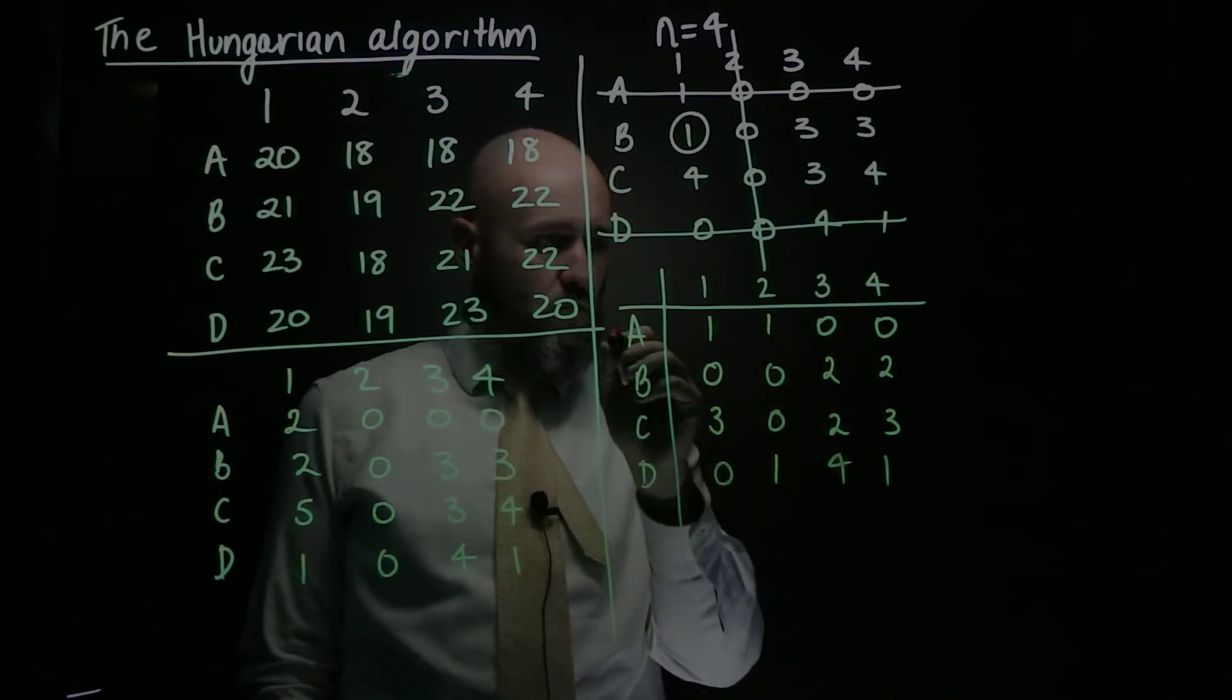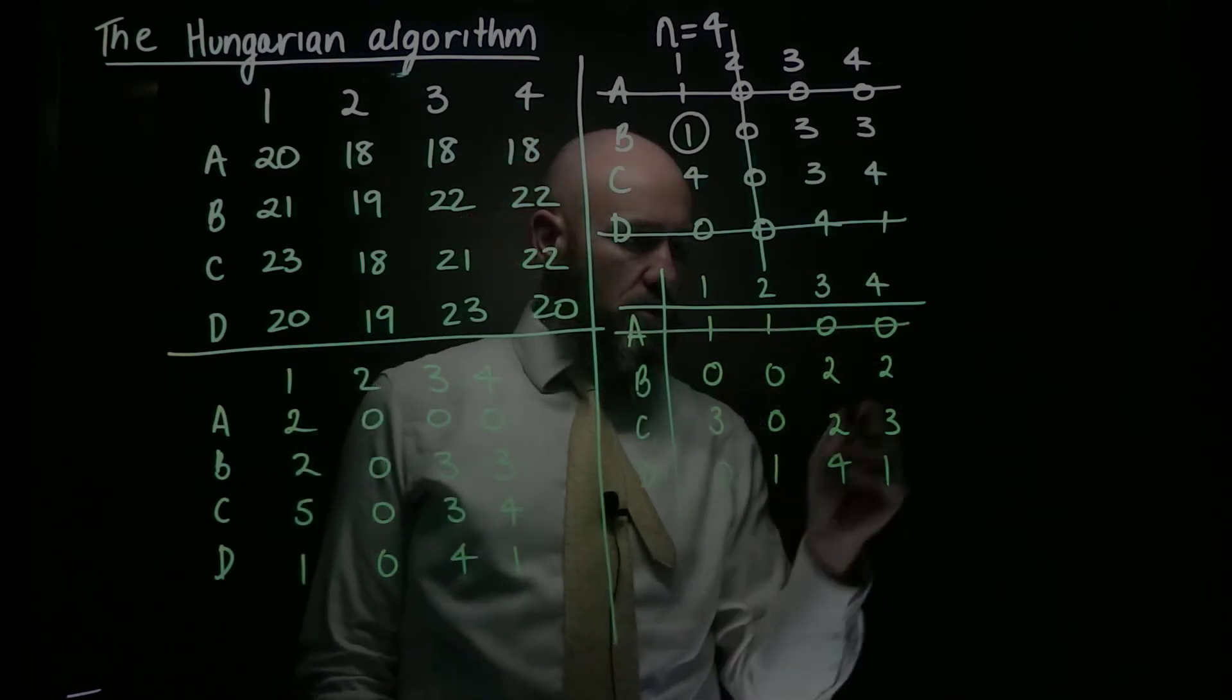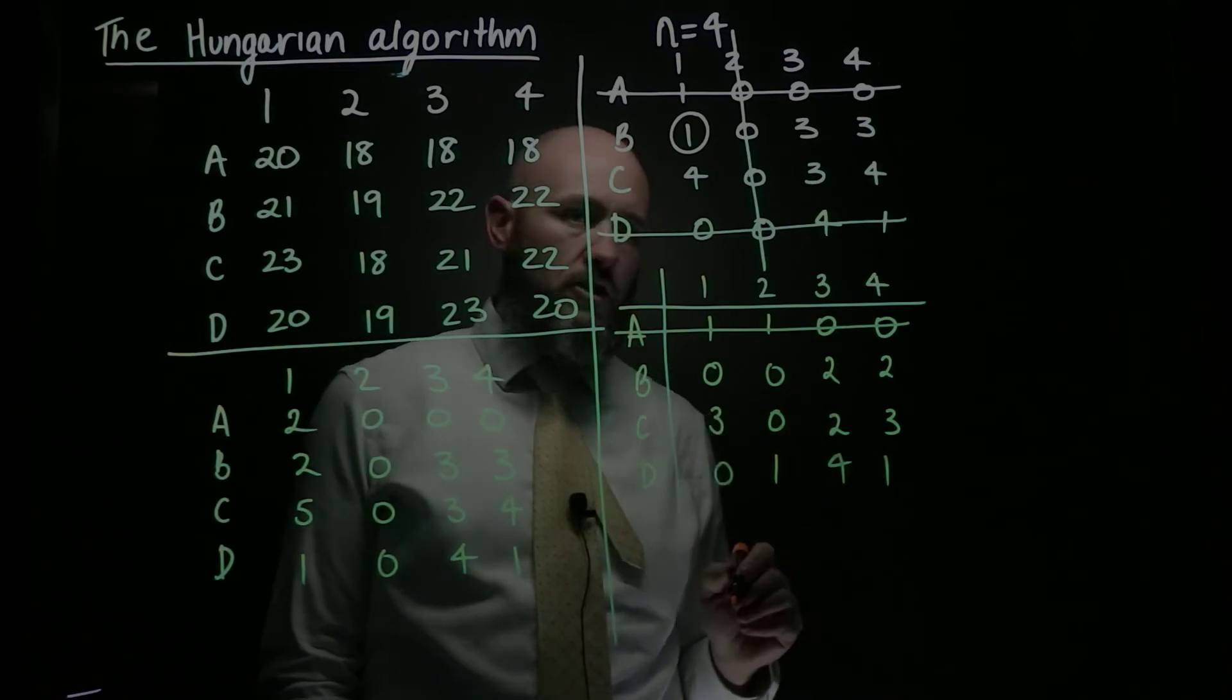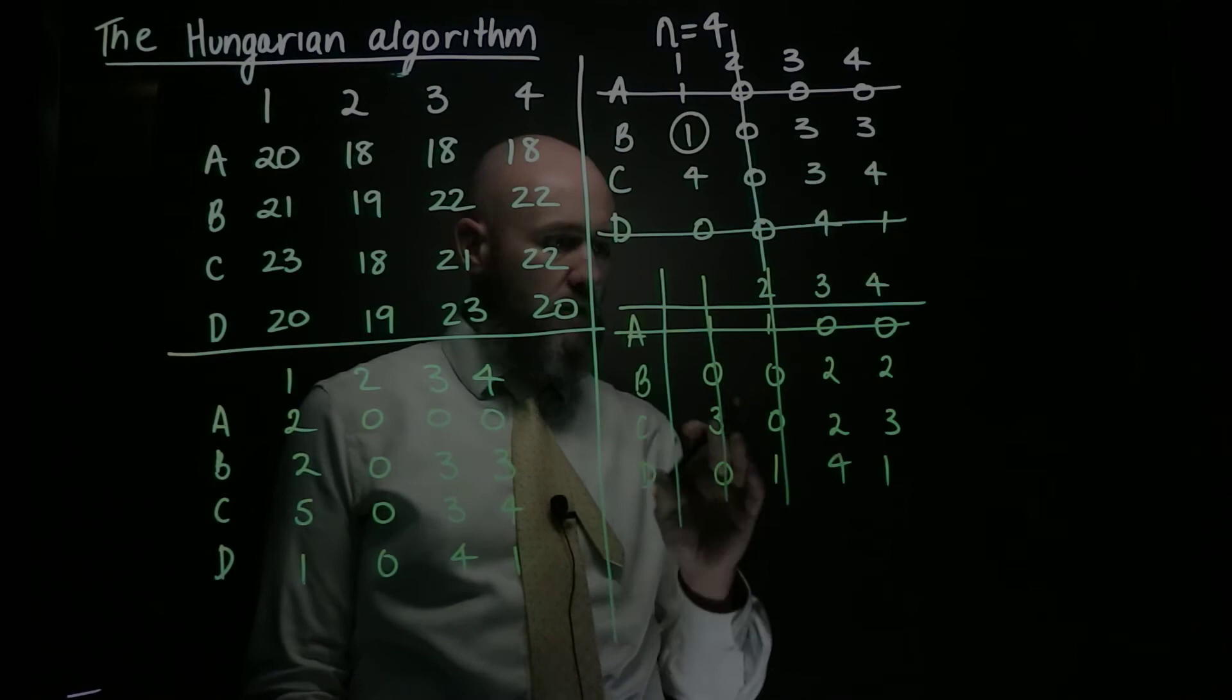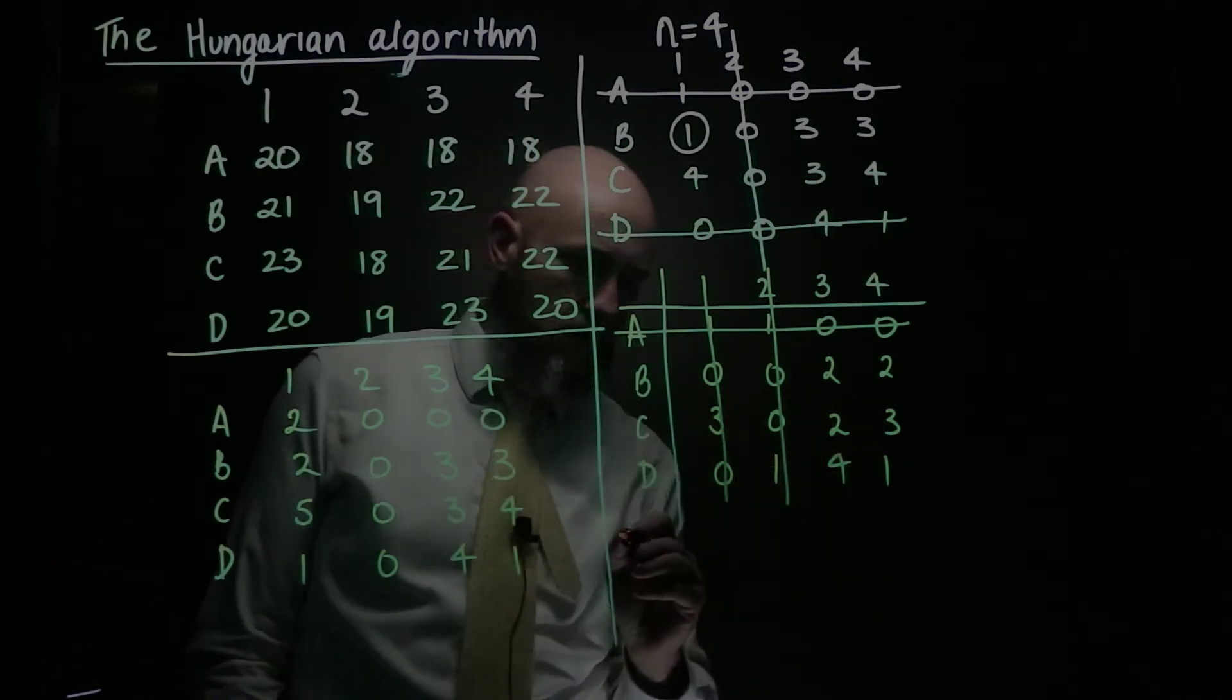Now what I can see is I can wipe out those two, they're actually the only two zeros in these two columns, which means that I can do this and this, and I've done it, I've managed to cover them all.